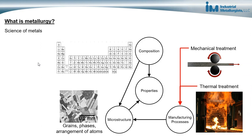So what is metallurgy? Metallurgy is the science of metals. It involves understanding the relationship between the properties of metals and their composition, their microstructure, and manufacturing processes that are used to manipulate and modify metals.